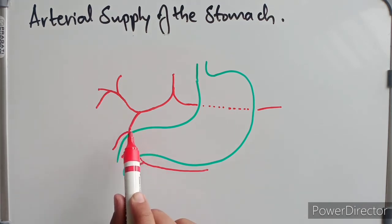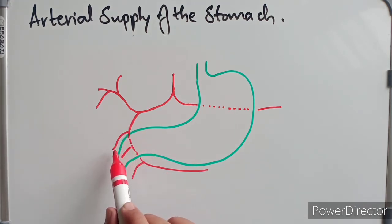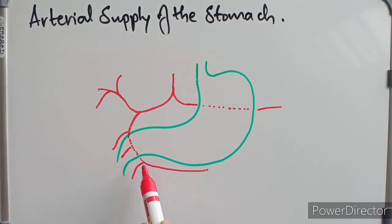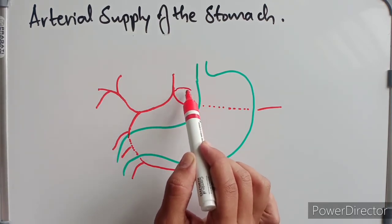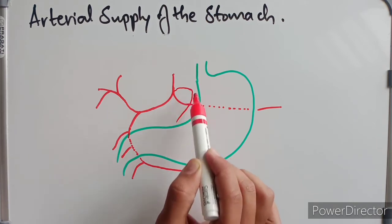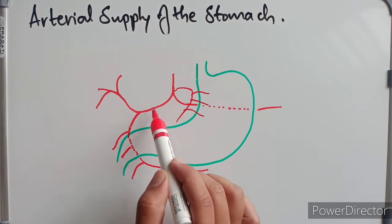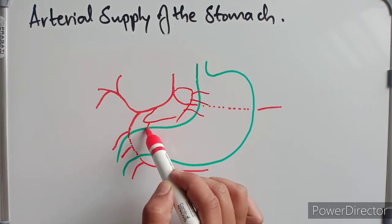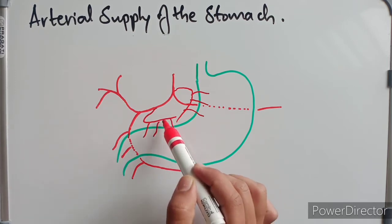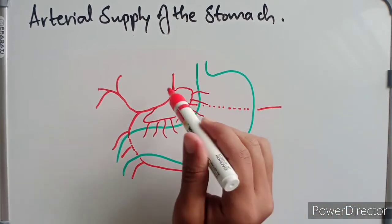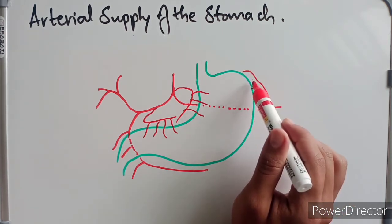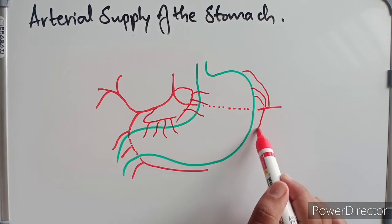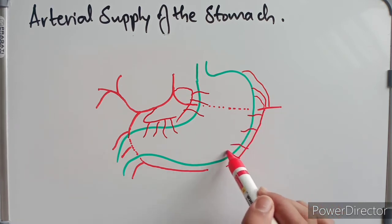The gastroduodenal artery gives the supraduodenal artery, passes behind the duodenum as the retroduodenal artery, and becomes the right gastroepiploic artery after giving the superior pancreaticoduodenal artery branch. A small branch from the celiac trunk called the left gastric artery supplies along the lesser curvature of the stomach. The right gastric artery, a branch from the common hepatic artery, supplies along the lesser curvature up to the pylorus. The splenic artery gives five to seven short gastric arteries and a major branch, the left gastroepiploic artery, which supplies along the greater curvature.